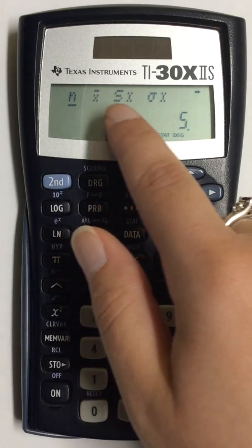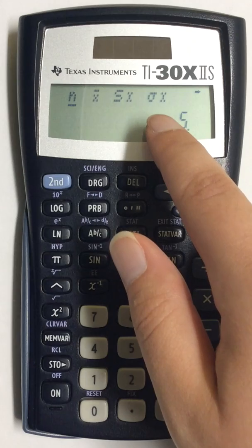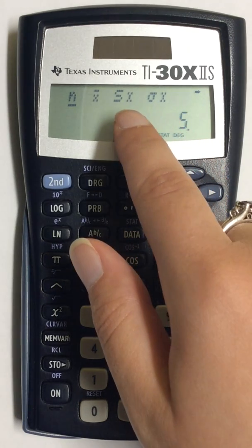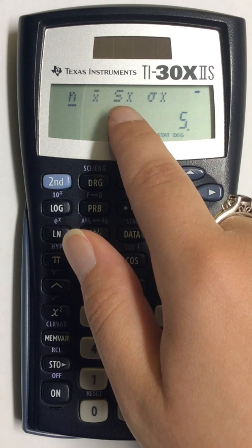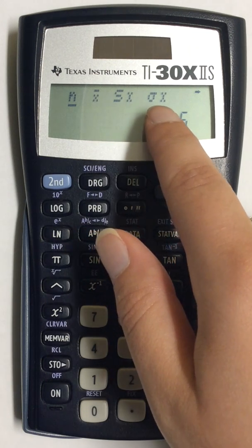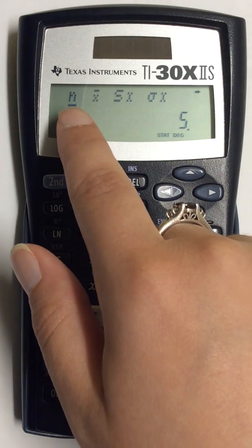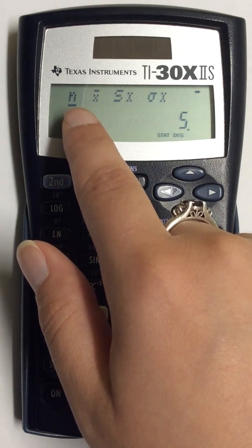A list of values shows up at the top of my screen and in order to find standard deviation, which is labeled sample as SX and population as sigma X, I need to move this little line at the top of the screen.